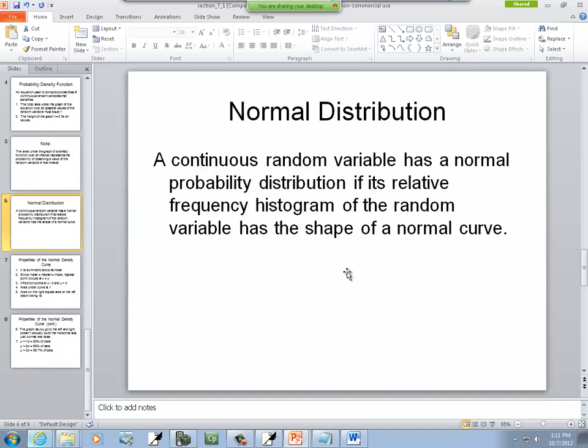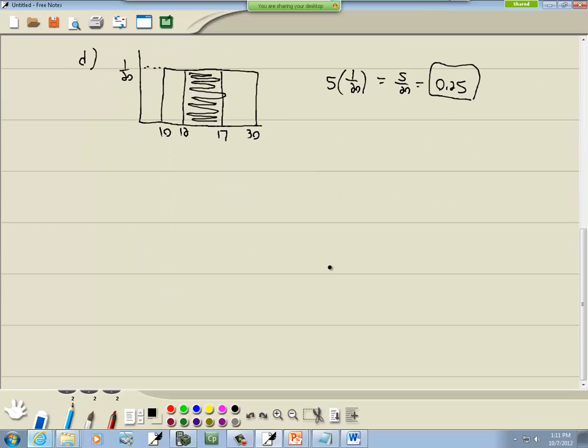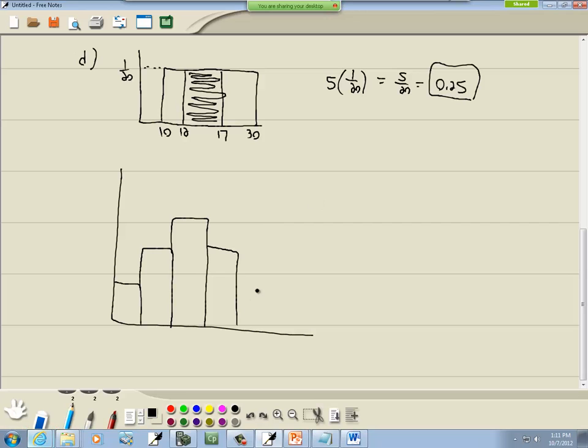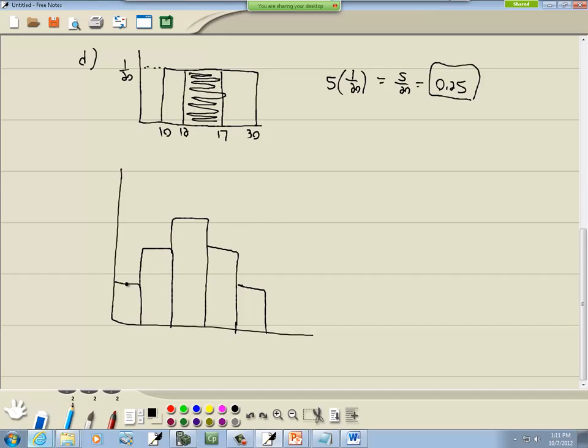Now, for a normal distribution. A, this is a continuous random variable has a normal probability distribution. If it's relative frequency histogram, the random variable has a shape of a normal curve. What does that mean? You draw your bar graph. And this says if it's relative frequency histogram. Though, actually, it could, it's not just relative frequency, but frequency histogram looks like the same thing, if you remember.